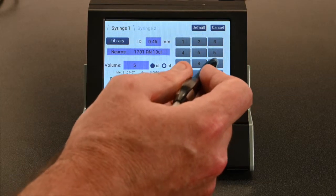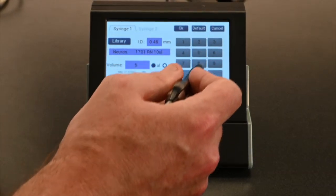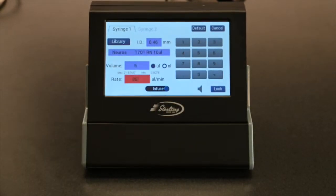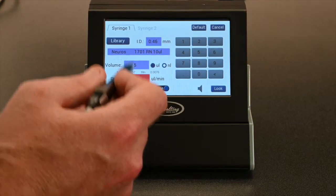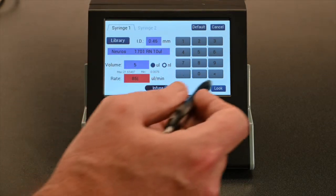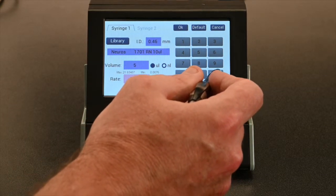If you exceed that, for example, if I put in 85 and I say OK, it alerts me with a red box around there saying something is wrong. You put in too little or too much of a rate that cannot possibly be done with this syringe. So you simply go back and change.